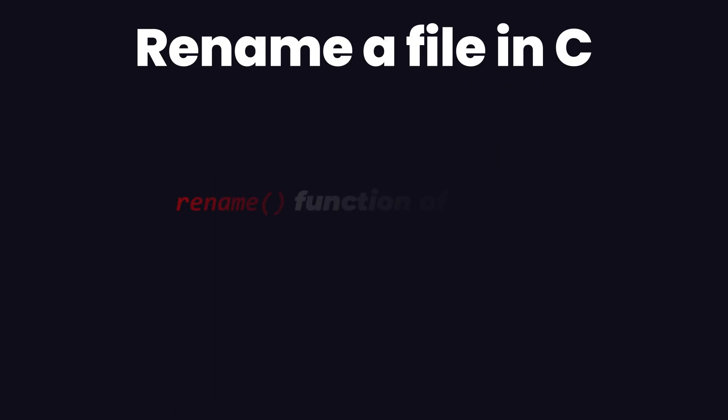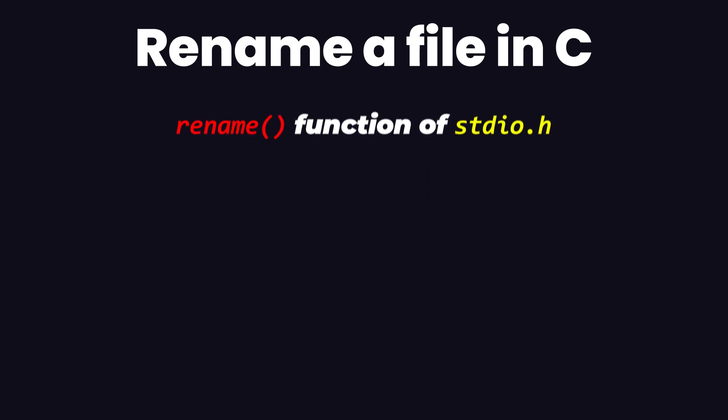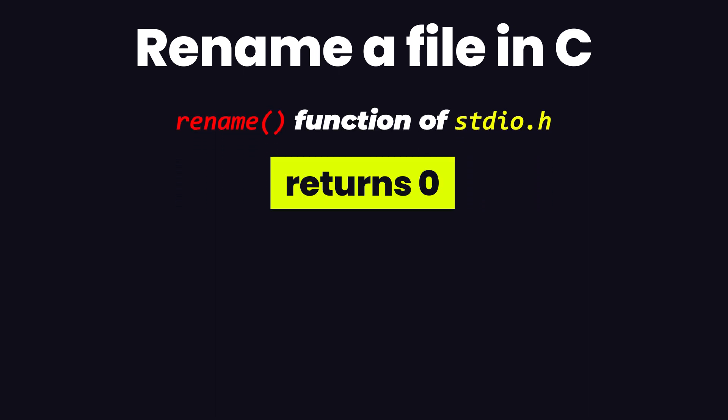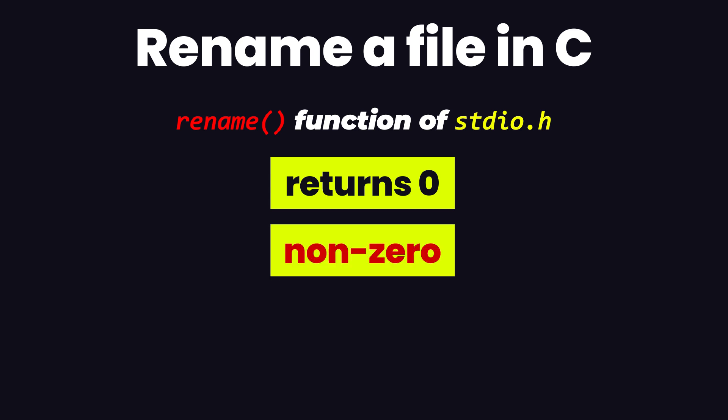To rename a file we have a function called rename which is included in the stdio.h library. The rename function takes the existing file name and the new file name as arguments and renames the file. This function returns 0 if the file is renamed successfully, otherwise it returns a non-zero value which is the error.